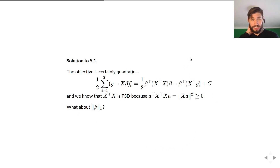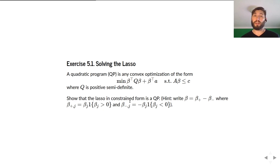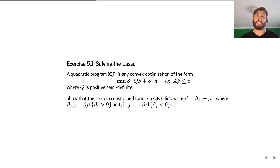Let's go through the solution to 5.1. In this exercise, we wanted you to show that the lasso problem under its constraint form is equivalent to a quadratic program. Quadratic programs are specifically programs with a quadratic objective where the Q matrix is positive semi-definite, and the constraint can be written as A times beta less than or equal to some C — a linear inequality constraint.